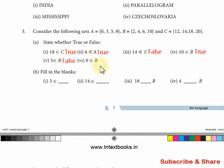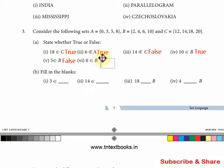Last sub-question: 0 belongs to B — so 0 is in B. If you look at the statement, it is 0, so if you look at the statement, it is false.